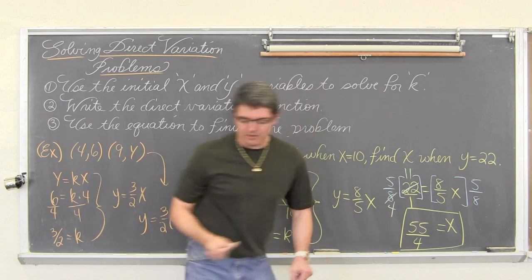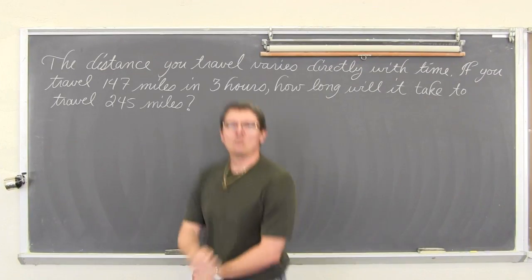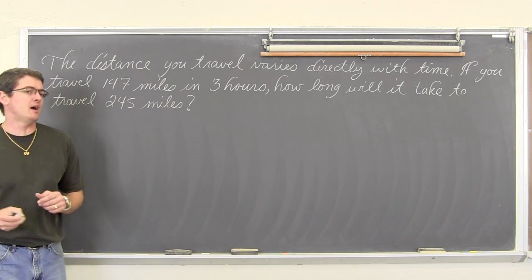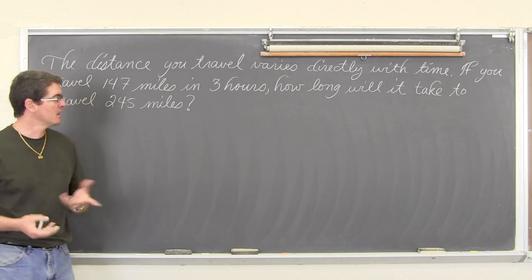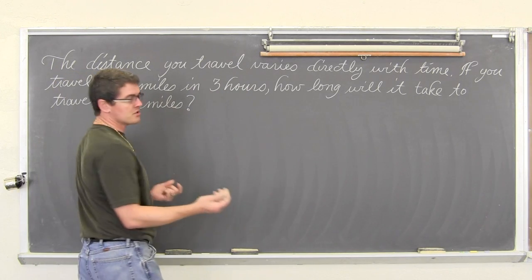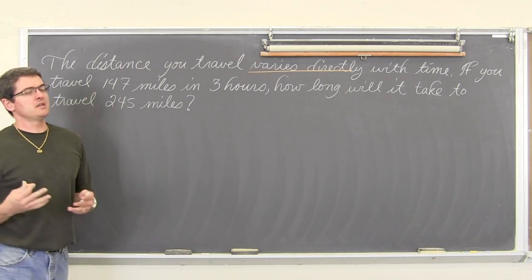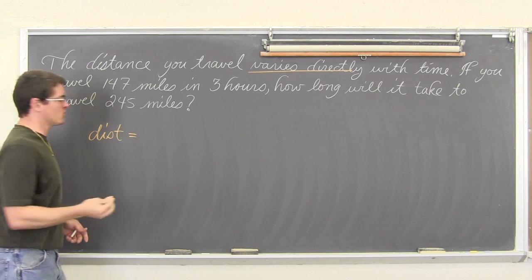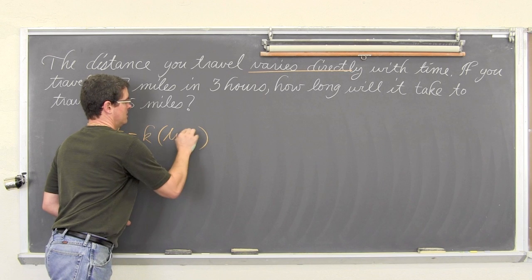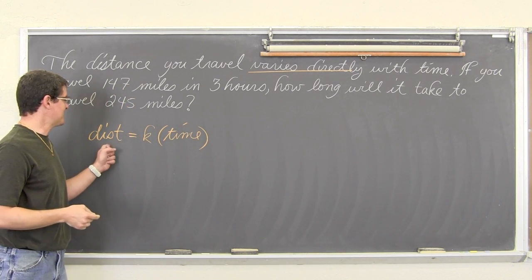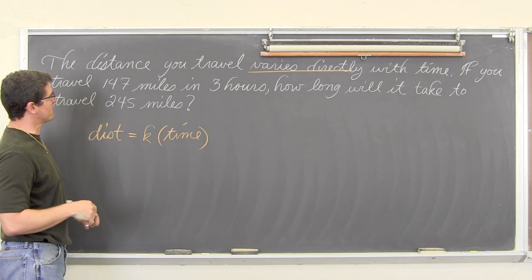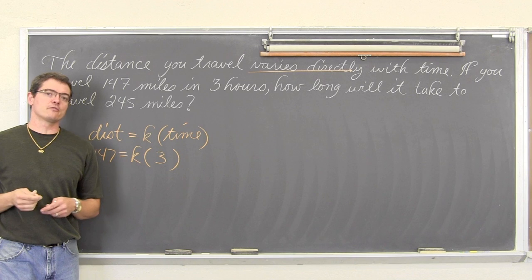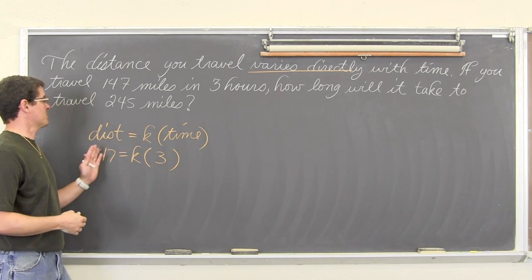So, we have one last example. It is going to be a word problem, and we will be done talking about direct variation. Last example. Ok. The distance you travel varies directly with the time. If you travel 147 miles in 3 hours, how long will it take for you to travel 245 miles? Well, if you are studying direct variation, you will... of course you are because you are watching this, but as soon as you see k varies directly, you should be going, ok, the distance traveled varies directly with time. Oh, this looks familiar. Distance equals rate times time. Great. Ok. So, if you travel 147 miles in 3 hours, how long will it take you to travel 245? We will keep it up with the direct variation idea. Plug in the y, plug in the x, or in this case, distance and time.